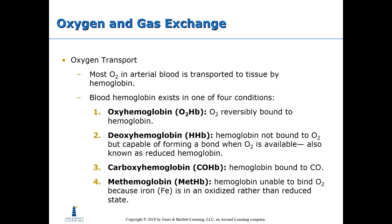Most oxygen in arterial blood is transported to the tissues by hemoglobin. Blood hemoglobin exists in one of four conditions: oxyhemoglobin, where oxygen is reversibly bound to hemoglobin; deoxyhemoglobin, where hemoglobin is not bound to oxygen but is capable of forming a bond when oxygen is available (also known as reduced hemoglobin); carboxyhemoglobin, where hemoglobin is bound to carbon monoxide; and methemoglobin, where hemoglobin is unable to bind oxygen because iron is in an oxidized rather than a reduced state.